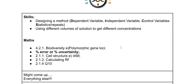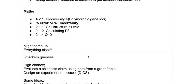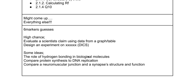In skills, make sure you can identify and design a method — remember dependent variable, independent variable, control variables, statistics, and repeats. Calculating volumes of solutions to get different concentrations is also important. In maths, RF values, Q10 for enzymes, and percentage error and uncertainty haven't been on for ages. Please don't just focus on this content — anything could come up. Good luck with your exams; don't use the words 'amount' or 'size' — use as much precise terminology as you possibly can to get as many marks as you can.